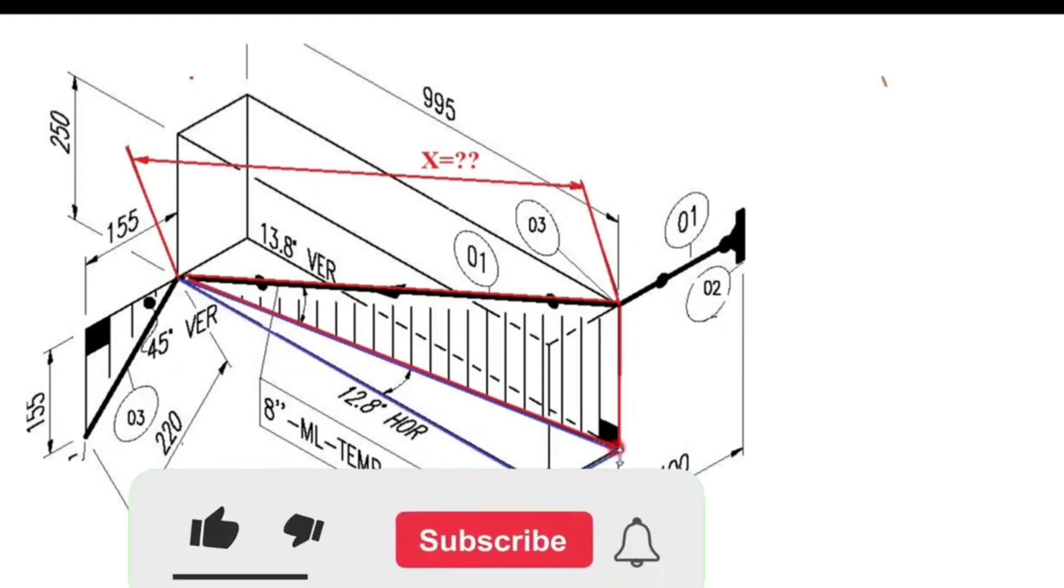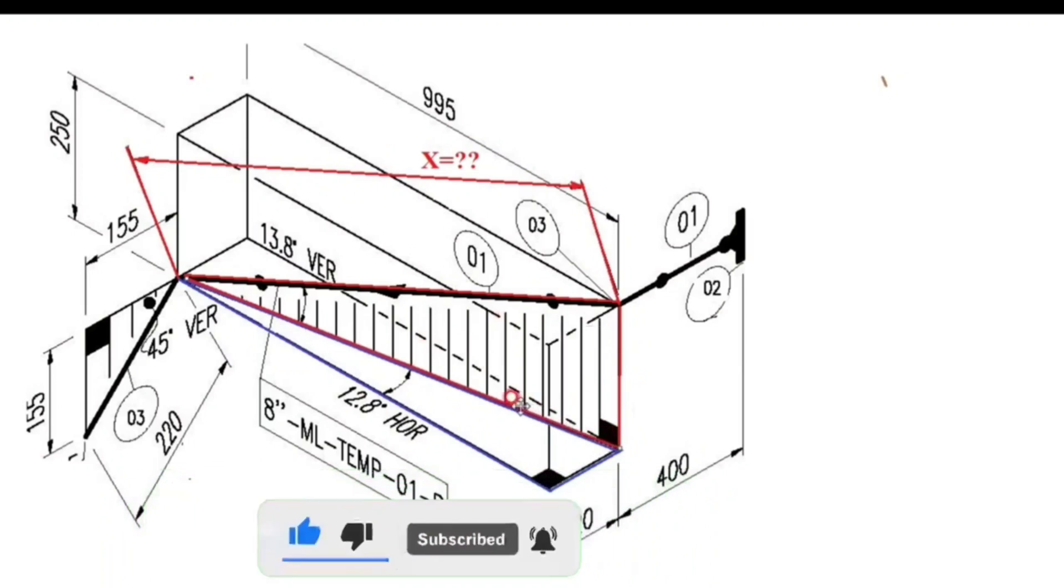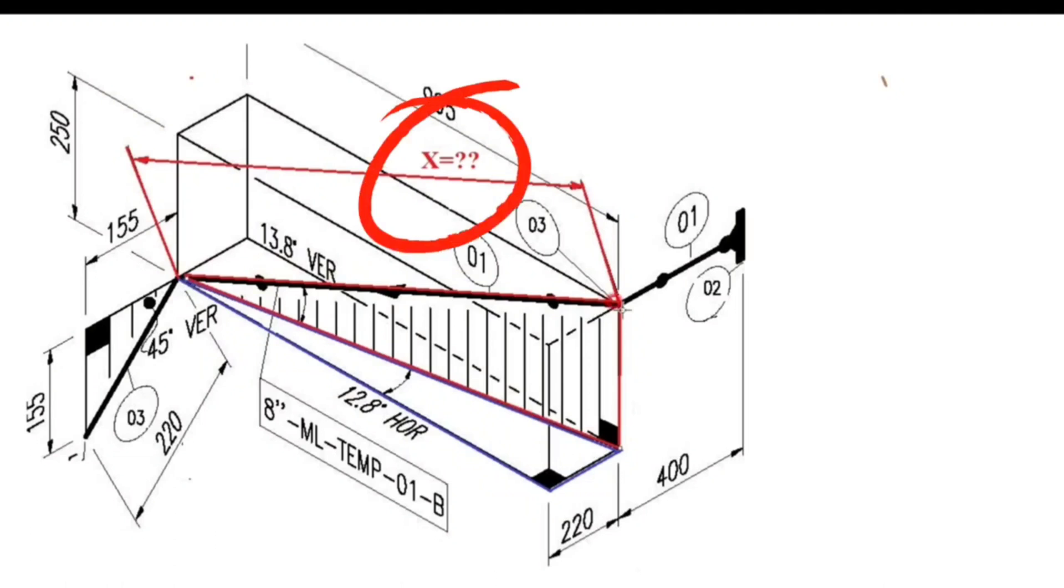There are two triangles here, one marked with a red line and the other with a blue line. Here is the hypotenuse of the blue triangle, is the cathetus of the red triangle. We need to find the hypotenuse of the red triangle.